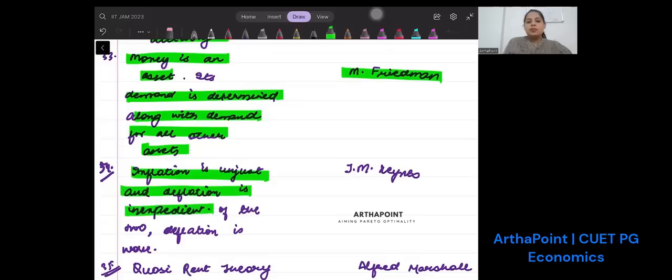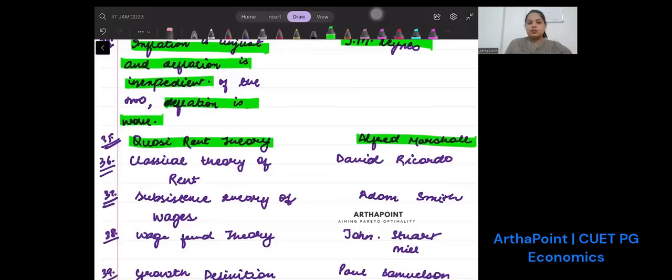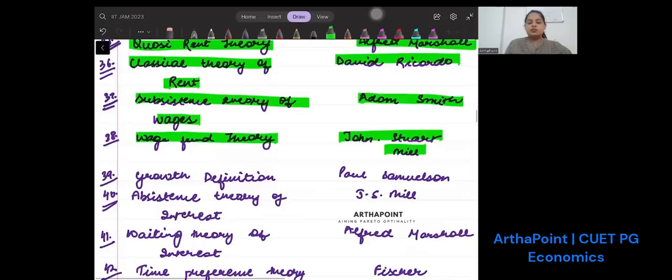Inflation is unjust and deflation is inexpedient. Of the two, deflation is worse. Who stated this? J.M. Keynes. Quasi-rent theory was given by Marshall. Classical theory of rent was given by Ricardo. Subsistence theory of wages was given by Adam Smith. Wage fund theory was given by John Stuart Mill.